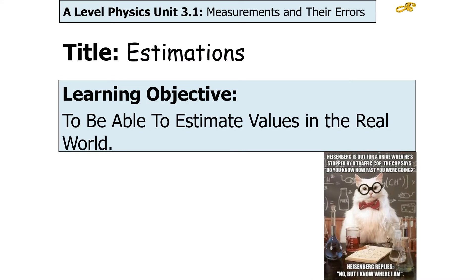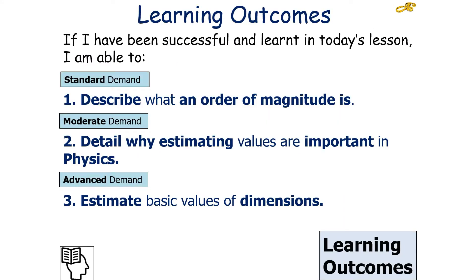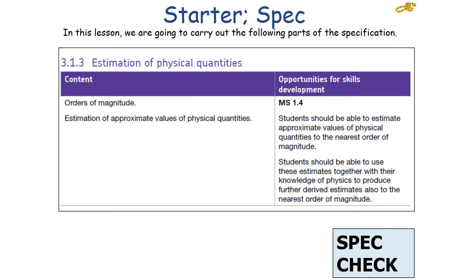In today's lesson, we're going to try to estimate values in the real world. So that includes describing what an order of magnitude is, detailing why estimating values are important in physics, and estimate basic values of different dimensions, which falls into the following part of the AQA A-level physics specification, which includes estimations of physical quantities, orders of magnitude, and estimation of approximate values of physical quantities.